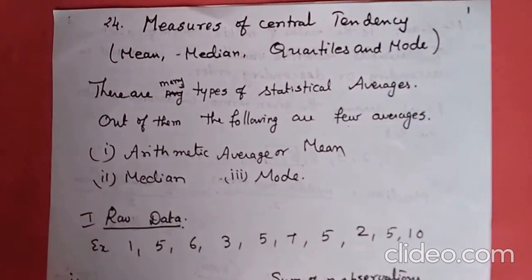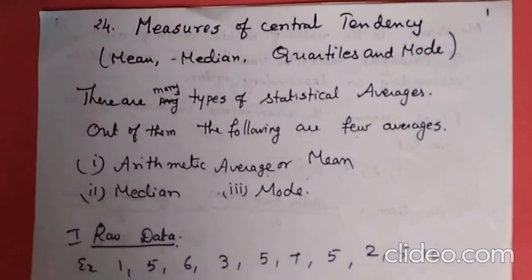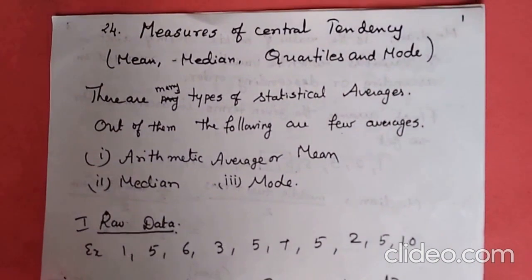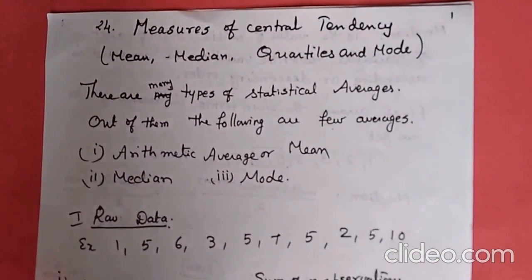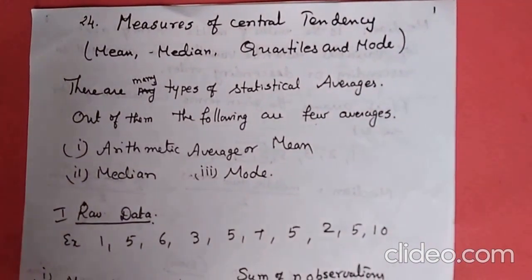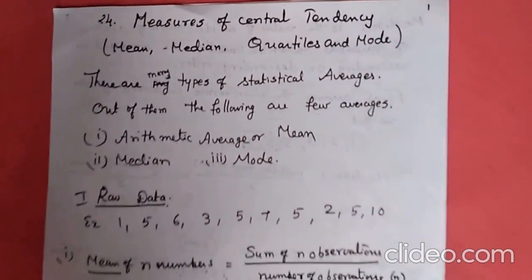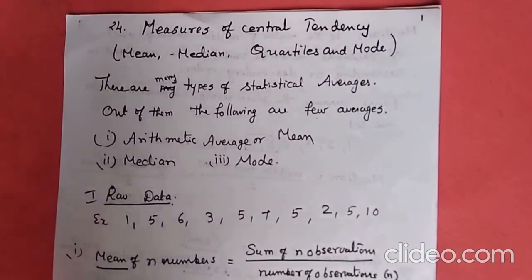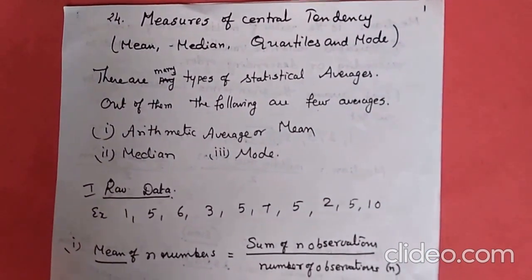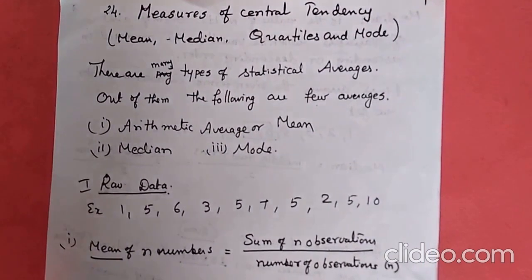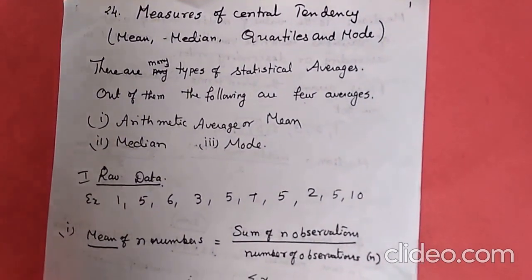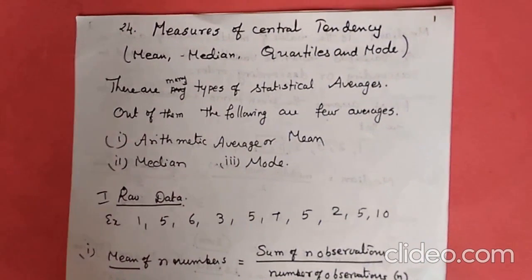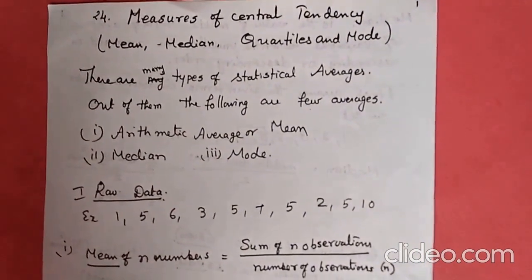First one is raw data. Raw data means the numbers are not arranged in ascending or descending order — the numbers are shuffled. For example: 1, 5, 6, 3, 5, 7, 5, 2, 5 and some numbers. This is called raw data — it is not arranged in any order.